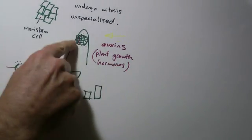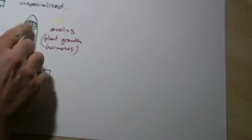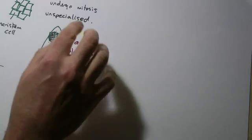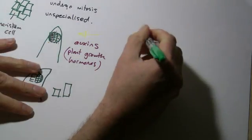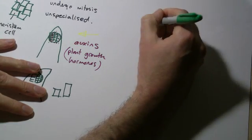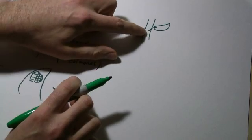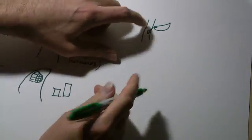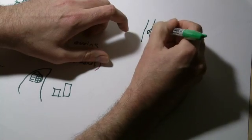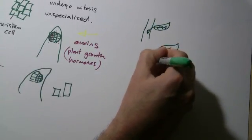So auxins are causing them to undergo mitosis in this case. Now in the cases of cloning, let's say we have a plant here and we take a cutting from it. You would slice that not only the stalk or leaf, you'd actually try and take a bit of tissue off the plant as well as a leaf. So if you were taking a cutting, so here we go, slice this off, I've got this bit of cutting.